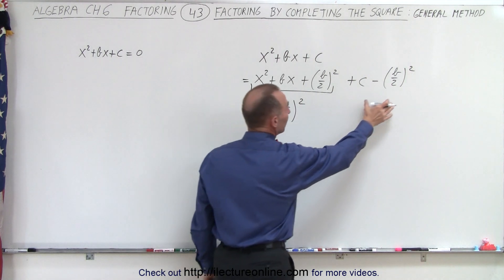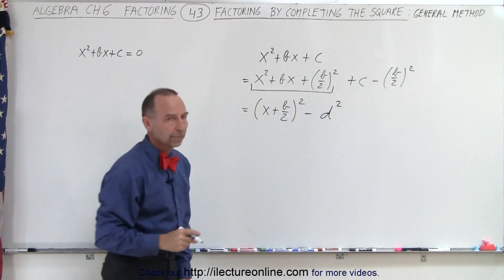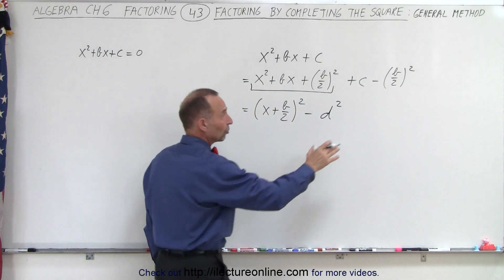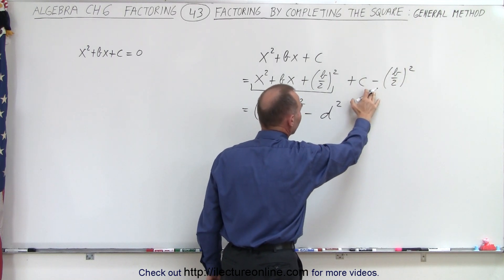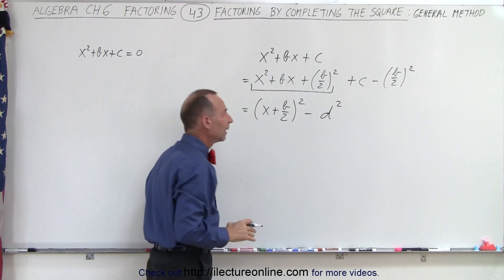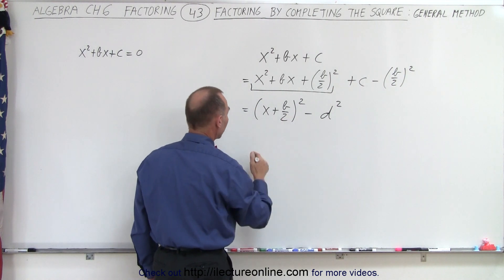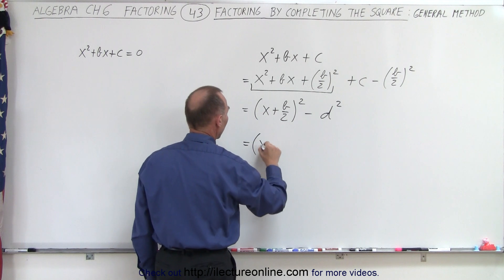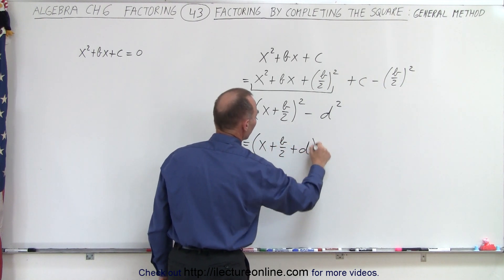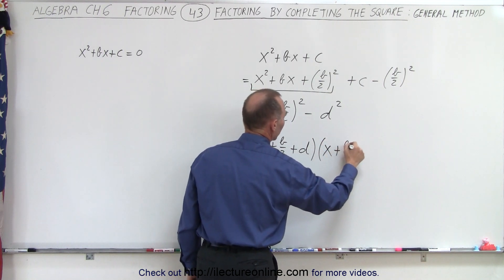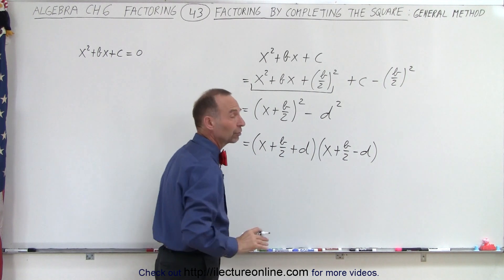And this, to make it simple, we're going to write this as minus d². Because notice that these are just simply constants, and we can take this whole thing and simply rewrite it as minus d². Then we realize we have the difference of squares, which can be factored using that technique. So this is written as (x + b/2 + d)(x + b/2 - d). And that would be the final factored form.